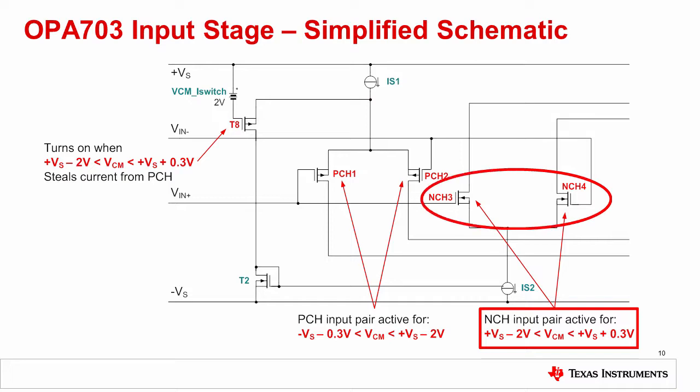Note that there is a region where both pairs share the bias current, called the transition zone. We will take a closer look at this behavior on the next slide.